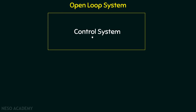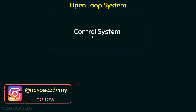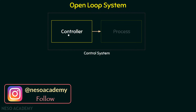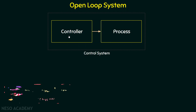We have discussed the block diagram of a control system, and we all know that any control system will take an input, process the input, and generate the output. But internally, the control system is divided into two different sections: one is the controller section, which controls the amount of input required to process the input, and the other is the process section, which actually processes the input in order to generate the output.